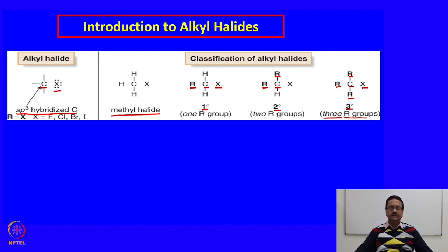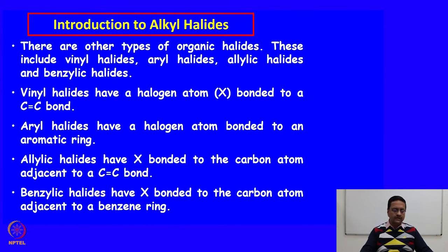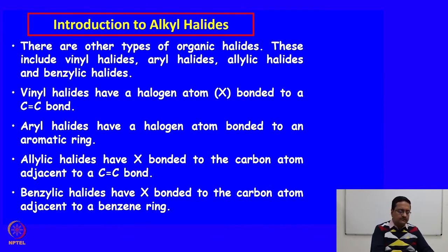We will see that these different alkyl halides — primary, secondary, and tertiary — have different types of reactions when we talk about substitution reactions. Other than alkyl halides, there are other types of organic halides: vinyl halide, aryl halide, allylic halide, and benzylic halide.